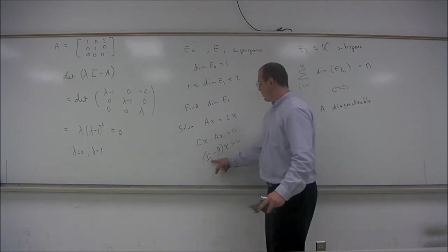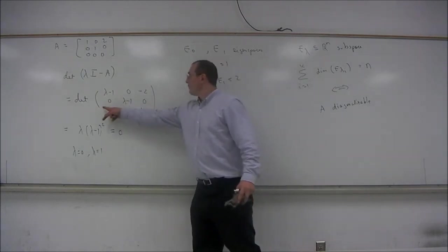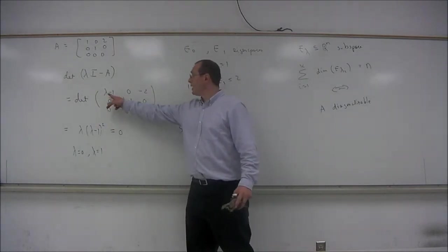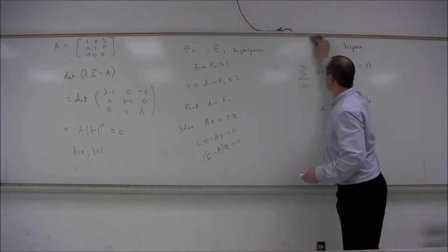it would be the homogeneous system IX minus AX equals 0 or simply I minus AX equals 0. And the matrix here, I minus A, is simply the matrix obtained from this one here by plugging in lambda equals 1.